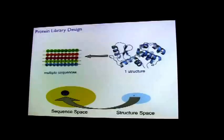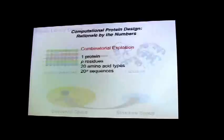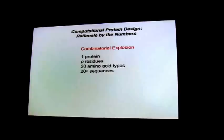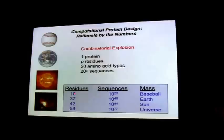We're also interested in designing libraries of sequences to use in experiments for screening or selection — specifying a collection of sequences rather than a single one. Why do this computationally? If you think about a single protein comprised of P residues, there are 20 naturally occurring amino acids, so there are on the order of 20^P different sequence combinations. Even for small proteins or peptides, the number of sequences is astronomically large.